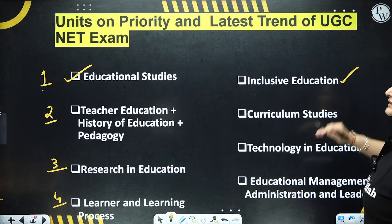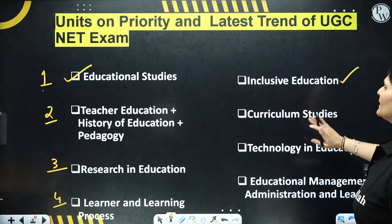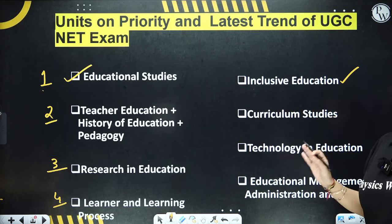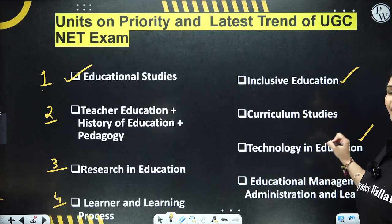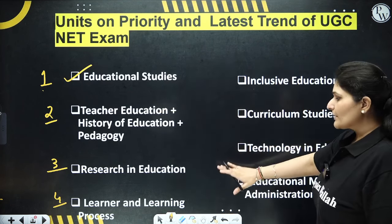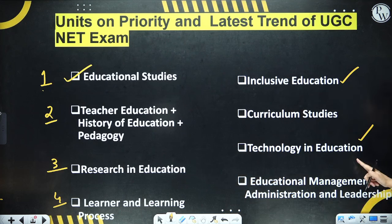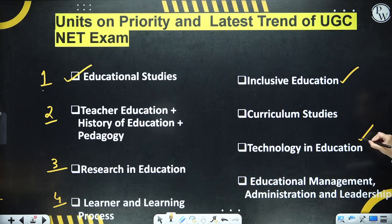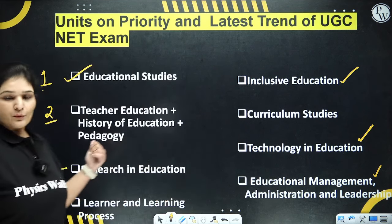After that comes Inclusive Education — because there are so many norms around inclusion. Then Curriculum Studies, generally 7 to 9 questions. Technology and Education is also important — you need the latest knowledge since this unit is ever-expanding with no limit. Then Educational Management, Leadership, and Administration. This is the priority-wise list I've shared with you.